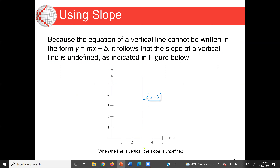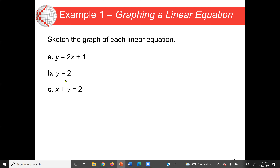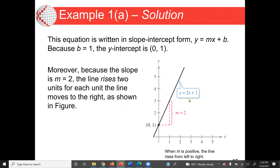Now let's see some examples. They say we should sketch the graph of each linear equation. First: y equal to 2x plus 1. This equation is written in slope-intercept form y equal to mx plus b. Since b equals 1, the y-intercept is 1 when x is 0. The slope is 2, so the line rises 2 units for each unit moved to the right — it rises from 1 to 3 when moving from x=0 to x=1.